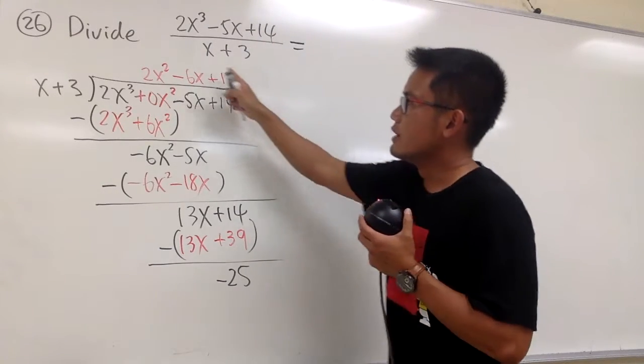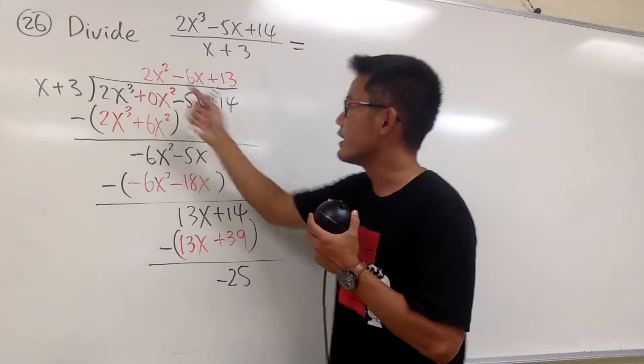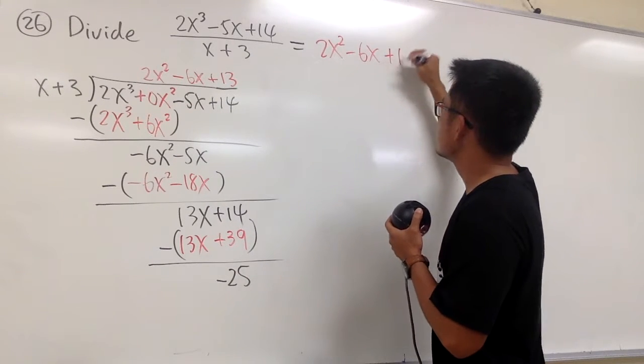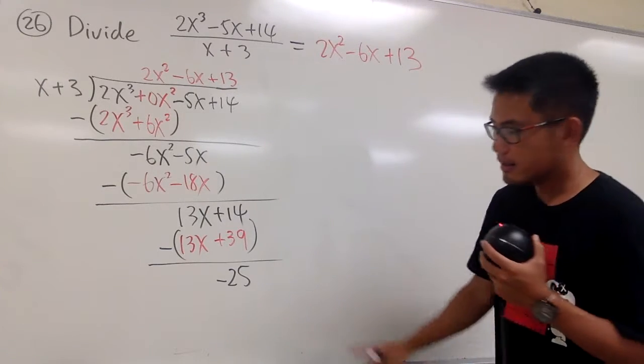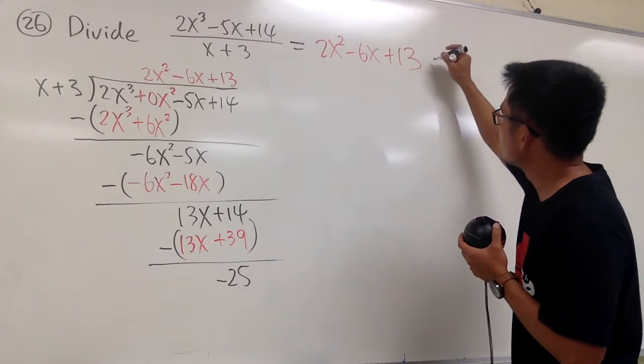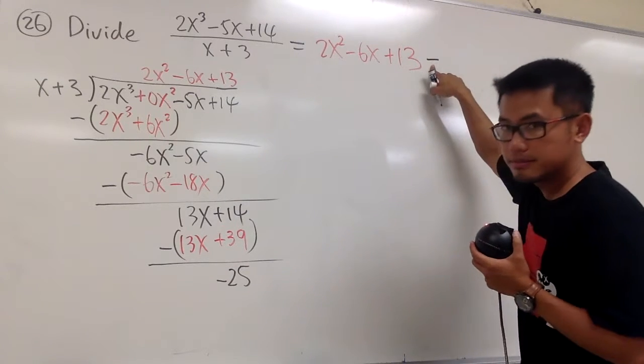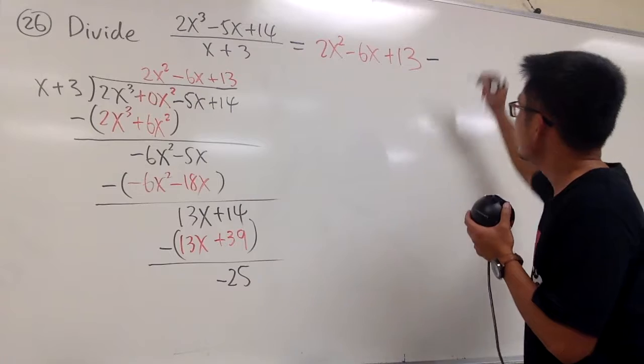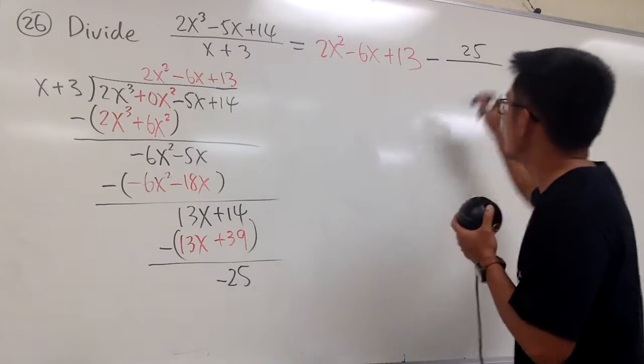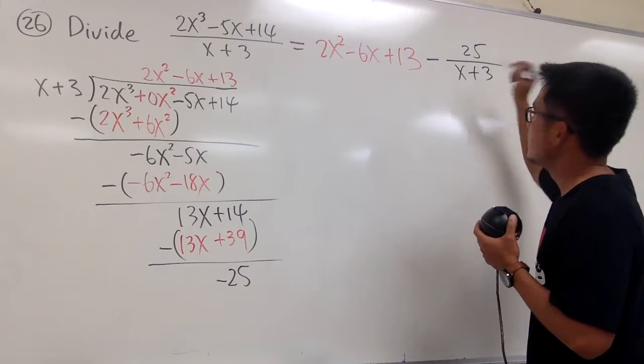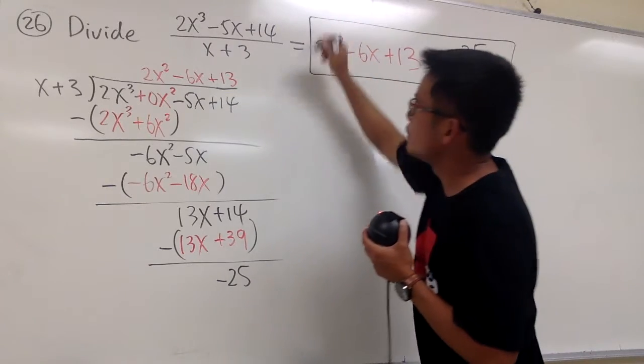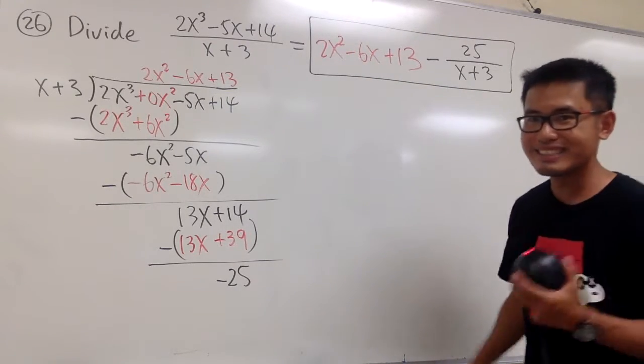So, this is equal to, this right here is called the quotient. We'll write it down first, which is that, 2x squared minus 6x plus 13. And then, this right here is the remainder. This is a minus. We have to subtract. So, put that right here. Minus. We put down 25 on the top. Over the original denominator, which is the x plus 3, like this. And this is how we'll present the answer when we're doing the long division. It's polynomials. And that's it.